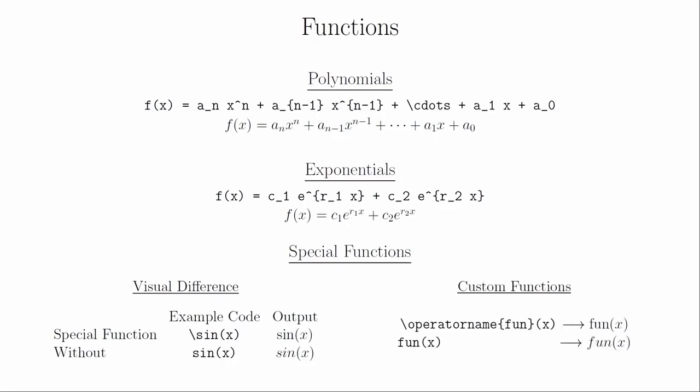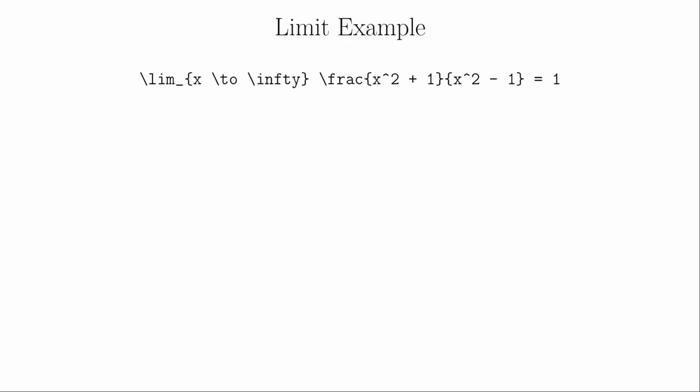LaTeX has most of the special functions that you will ever need. If you're not sure if the one you need exists, just try typing a backslash followed by your best guess. And if you ever needed to create a custom function, you can use \operatorname to create those upright characters. Let's look at the code for the evaluation of a limit. The \lim creates the limit notation, \to makes the right arrow, and \infty makes the infinity symbol. The underscore is telling LaTeX that you want this bracketed part to be typeset lower on the line, and then we have a fraction.